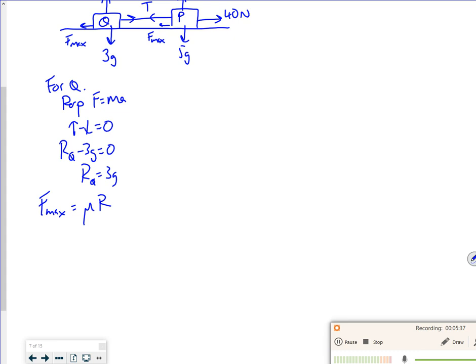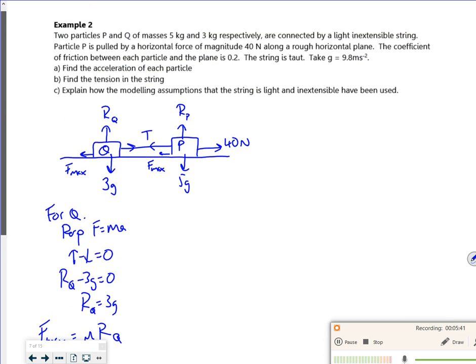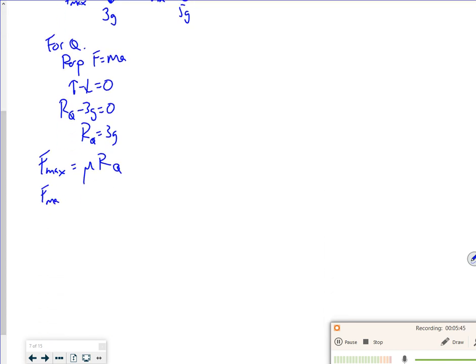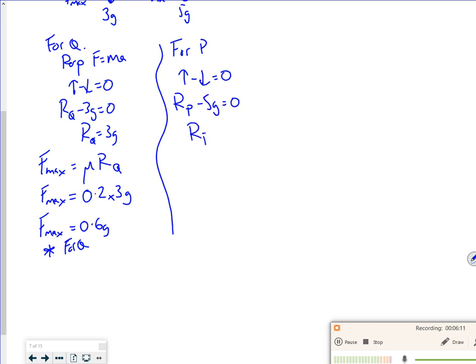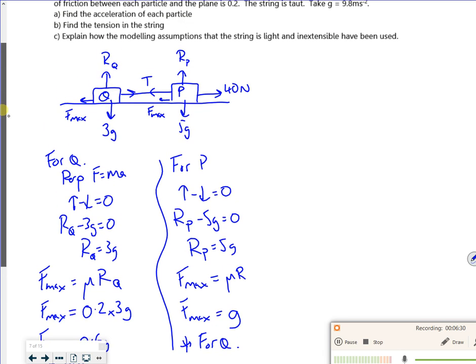Then let's look at Fmax. So that's μR for Q. And we said μ was 0.2. So Fmax for Q is 0.2 times by 3g. So that's 0.6g. So this one's for Q. Let's look at P now. Well, same idea. Up minus down is equal to 0. So RP minus 5g is equal to 0. So R for P is 5g. Fmax for P is μR. So Fmax is 0.2 times by 5. So that's just going to be g. So that's for Q. Right, so I got that. So now let's have a look.